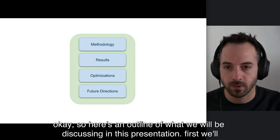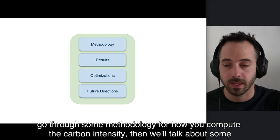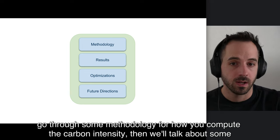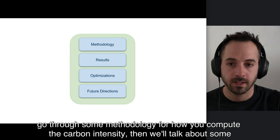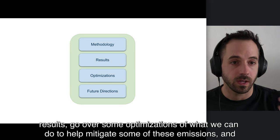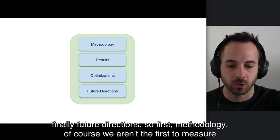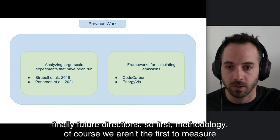Here's an outline of what we will be discussing in this presentation. First, we'll go through some methodology for how you compute the carbon intensity. Then we'll talk about some results. We'll go over some optimizations of what we can do to help mitigate some of these emissions, and finally, future directions.